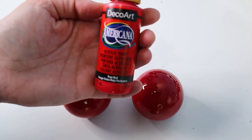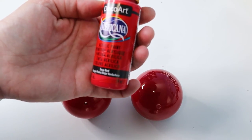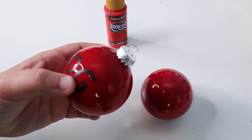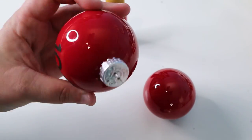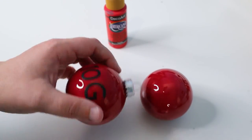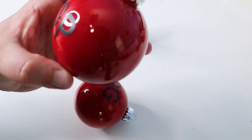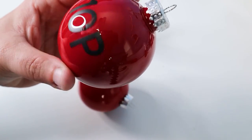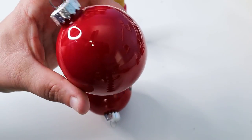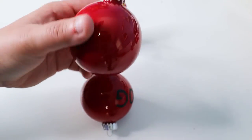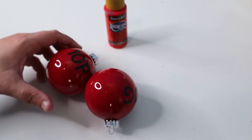Number ten is DecoArt Americana acrylic paint in true red. We've got our glass bulb here. Well covered. I don't see streaks. I don't see cracks. Looks really, really good. Our plastic bulb looks to be the same. Now I did get a little paint on the outside when I was doing these, so that's my own fault, but everything else looks well covered. Still looks like a good paint. I would say number ten is a winner.